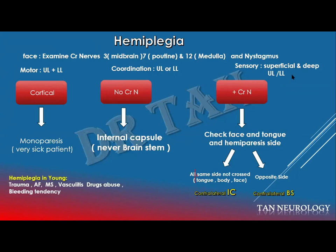The instruction might be to examine this patient neurologically, and usually this is a shock because you can't do all that in six minutes. What I'm advising is to just ask the patient to raise both arms or both lower limbs, and you will notice an unequal elevation. You might also be lucky and see obvious mouth deviation. So the first part of your case is solved — this is a hemiplegia case.